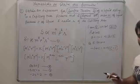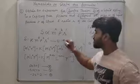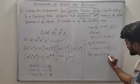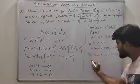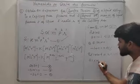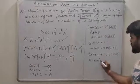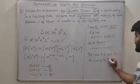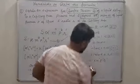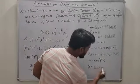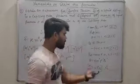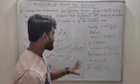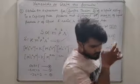अब put all the values of A, B and C in equation first। S is equal to K, M raised to power A — A तो 0 है, P raised to power B जो 1 है, R raised to power C — जिसके ऊपर 0 होता है वो खत्म हो जाएगा। क्या बचेगा — S is equal to K · P · R।